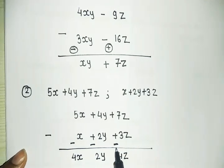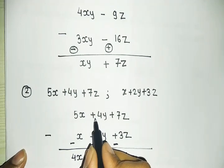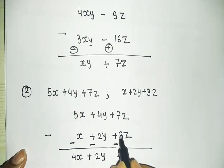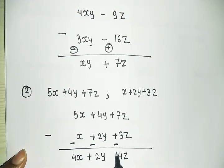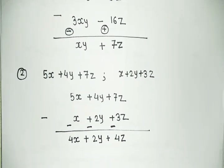The sign follows the bigger number. Between 4 and 2, the bigger number 4 has a plus sign. Between 7 and 3, the bigger number 7 also has a plus sign. So the answer is 4x plus 2y plus 4z.